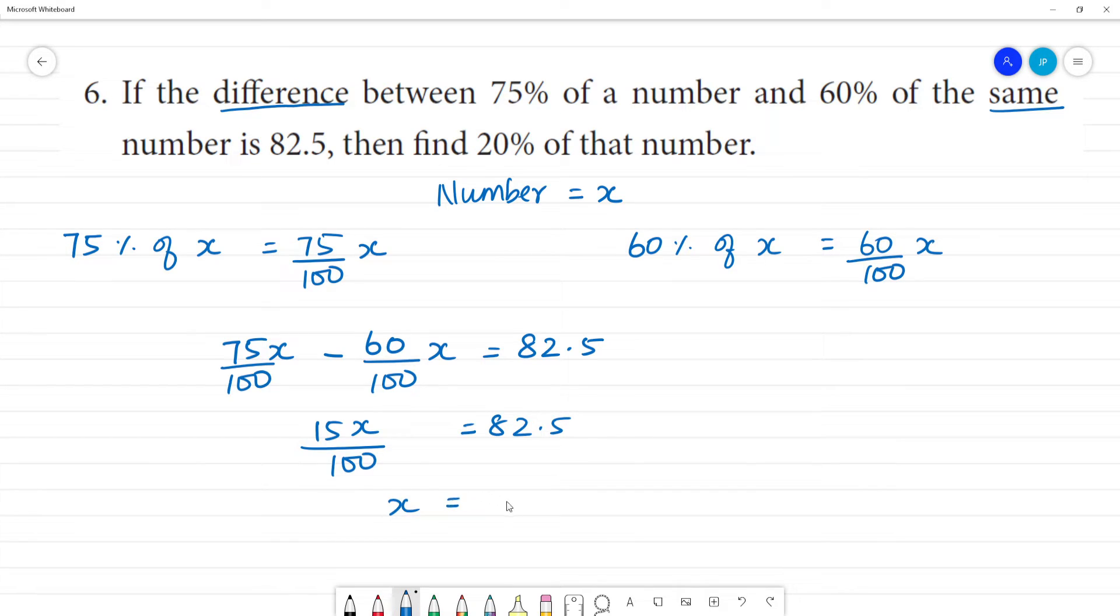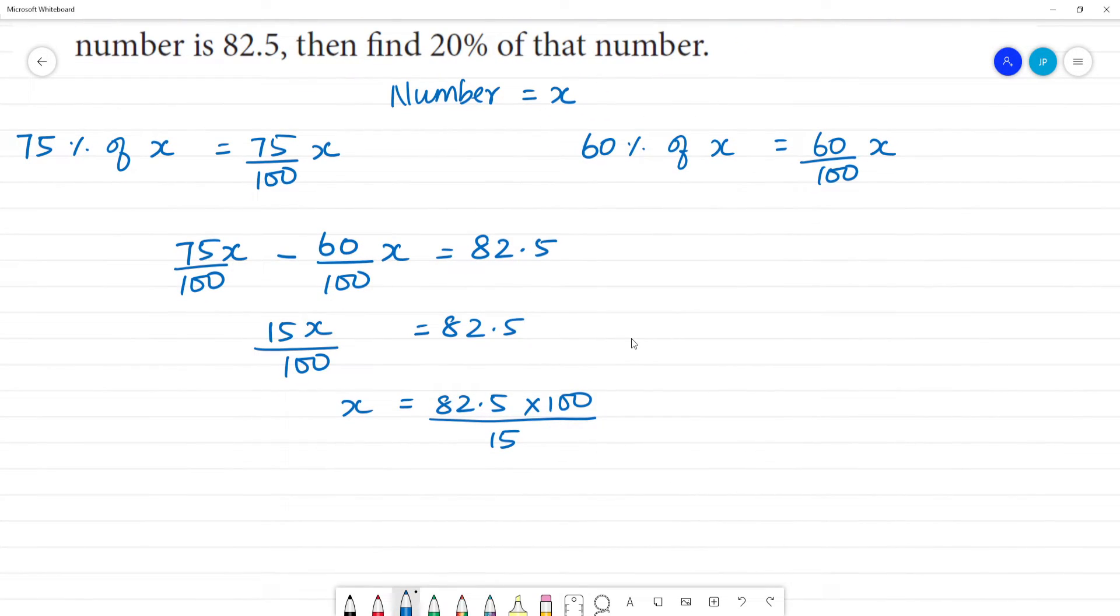So x equals 82.5 multiplied by 100 divided by 15. Now we are going to simplify this: 8250 divided by 15.